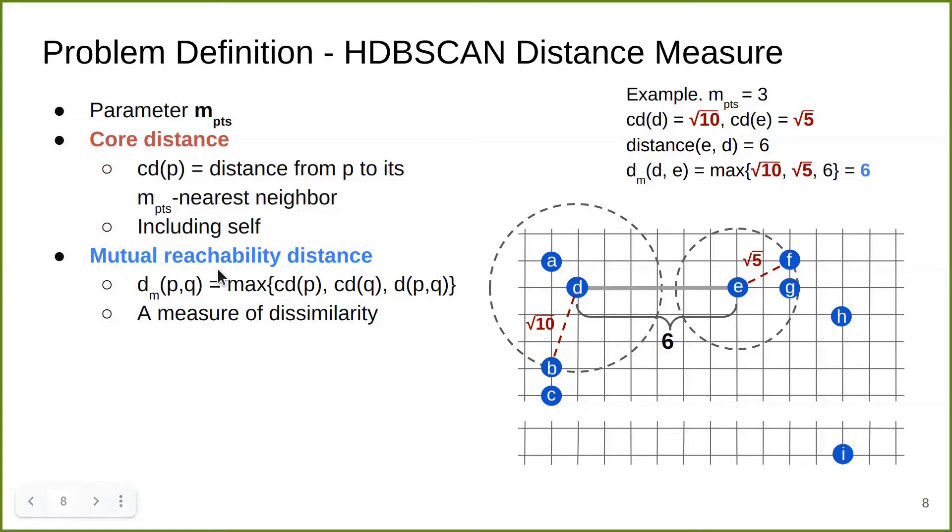With core distance defined, I'm going to define mutual reachability distance, which is the dissimilarity measure of the HDBSCAN problem. We use D and E as an example. D has a core distance of square root of 10, and distance between D and E is 6. The mutual reachability distance between D and E is the maximum among the three numbers, which is 6 in this case. This mutual reachability distance captures both density and distance between two objects. If an object is in a sparse region, it tends to have high core distance.